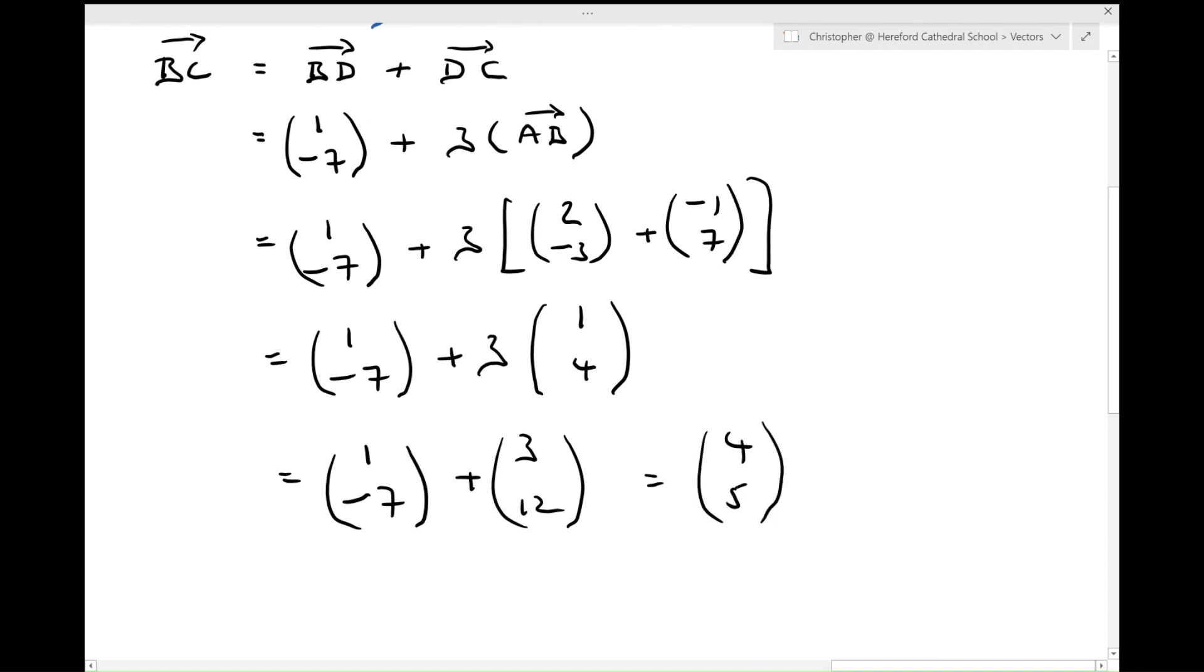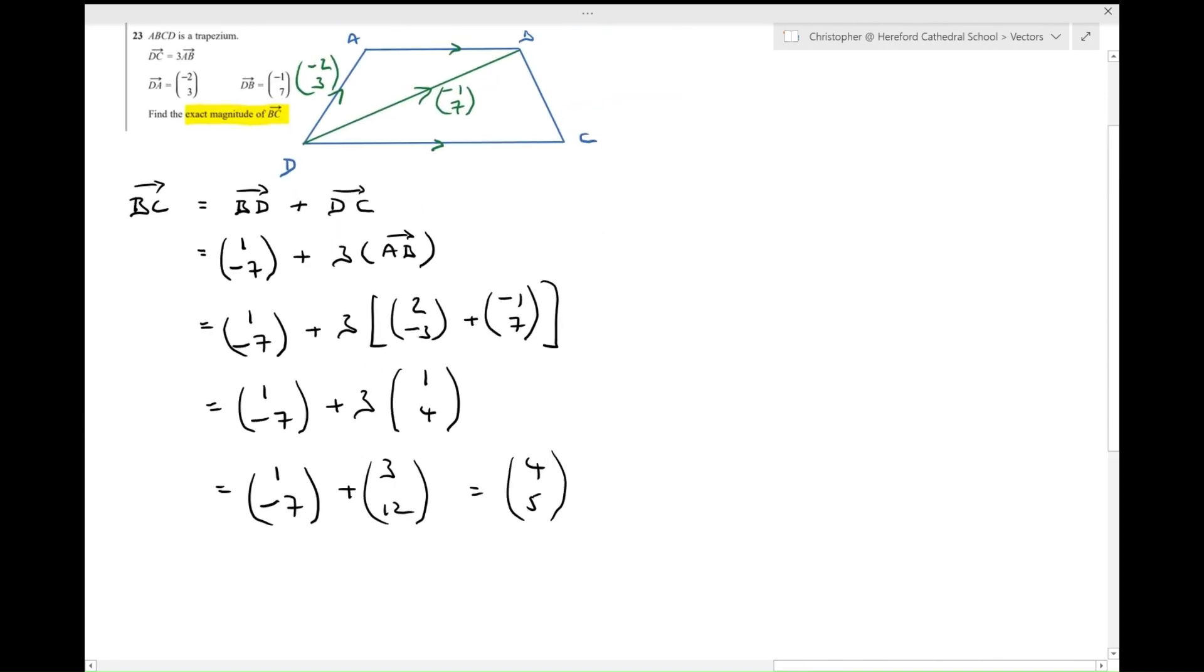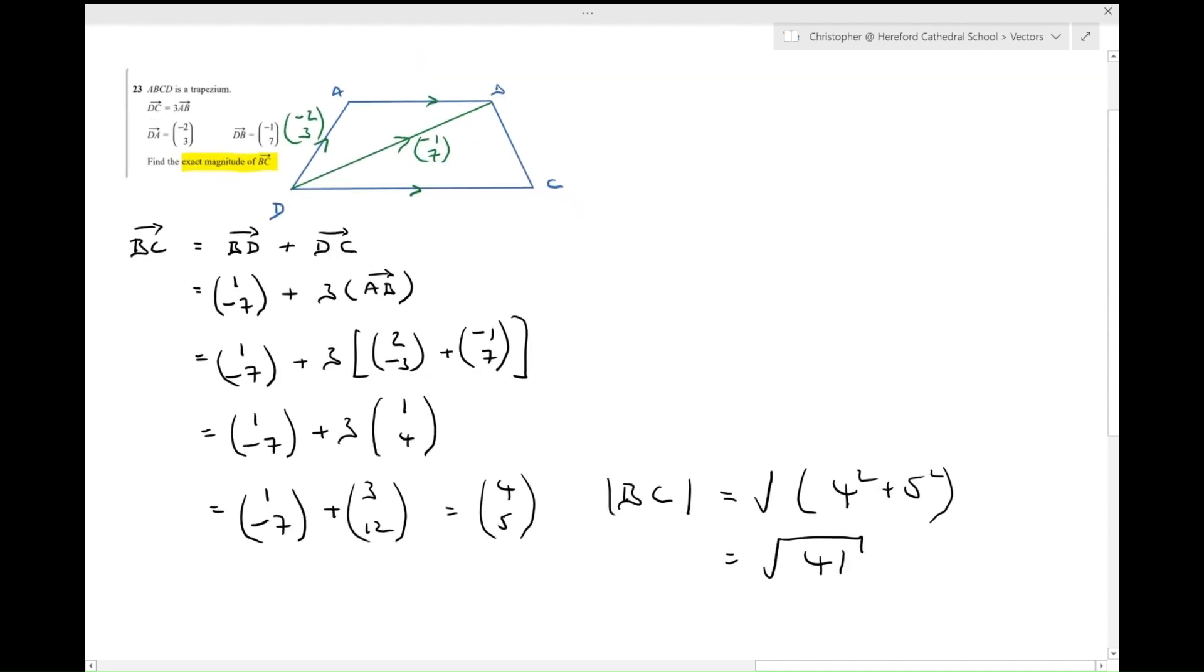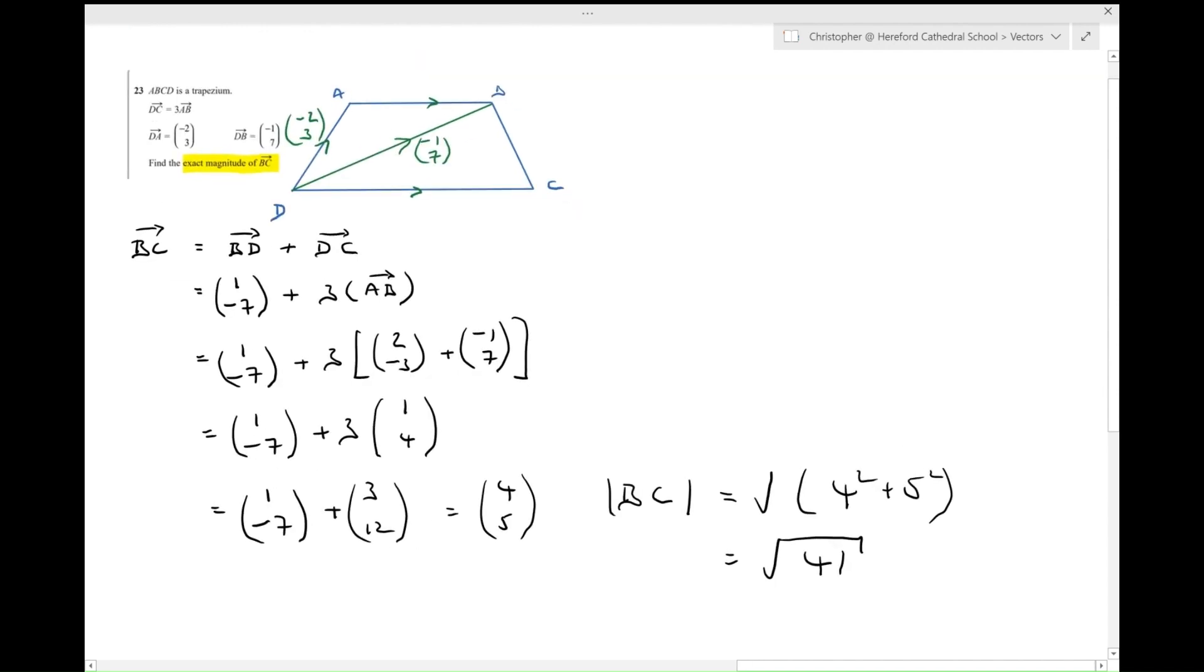All right. So I would need to find the magnitude of BC. So the magnitude of BC would be the square root of 4 squared plus 5 squared, which is the square root of 41. And that is my answer for question 23.